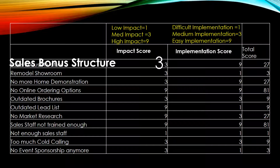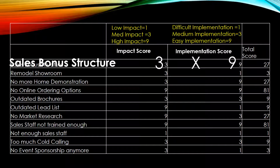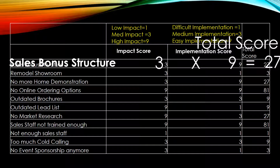For the sales bonus structure, the group decided it was a medium impact and a 9 for implementation — very easy to do. Maybe the owner of the company is in the room, has been considering it anyway, and all he needs to do is implement it. You assign the impact score and the implementation score for each item and then multiply those numbers. For the sales bonus structure, we get a total score of 27. You would do that for each item listed from the fishbone.